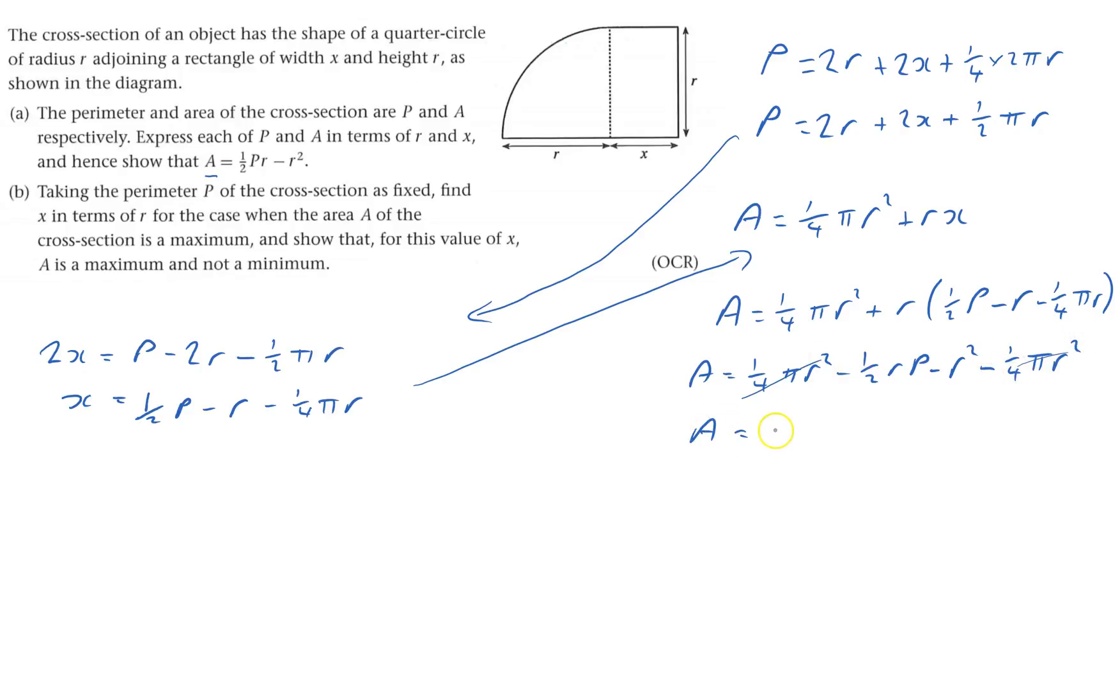And that will leave me with A equals, no it's not minus, it should be a plus, plus a half rP minus r squared. It's definitely the plus in front of it. Good, that's what I wanted.